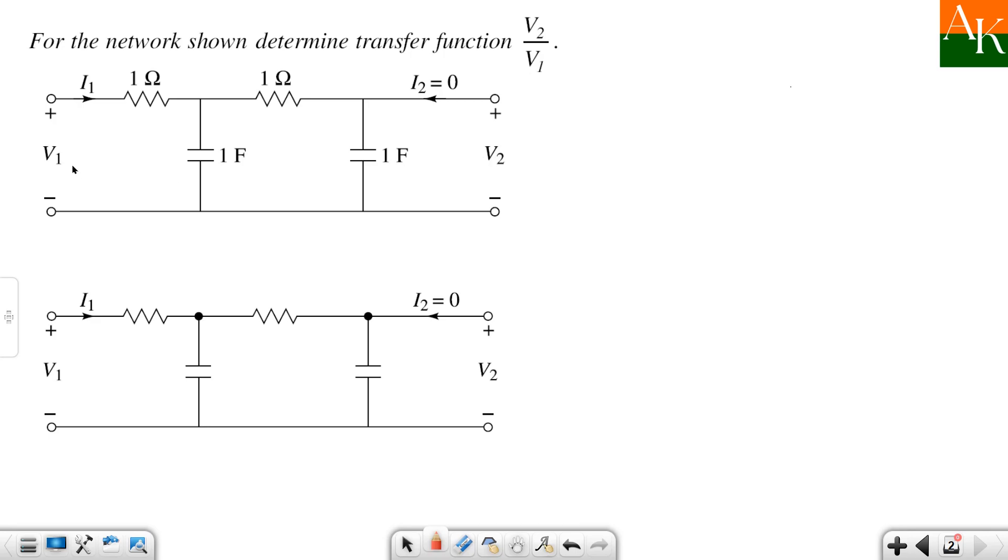So, the network is given. V2 is over here and V1 over here. First of all, you have to transform the circuit. The transformed circuit is, and now while transforming, what are the rules that you need to follow? Resistor has to be replaced as it is. Inductor has to be replaced as SL and capacitor has to be replaced as 1 by SC. So, this will become 1 by S and this will also become 1 by S, and resistor is 1 ohm, so this will be represented as 1 as it is.